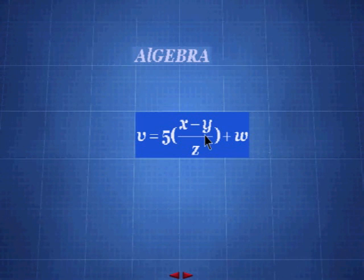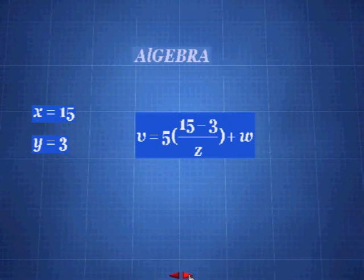And we're going to start by finding the values of x and y. So x is 15 and y is 3. So what we're going to do, we're going to do 15 minus 3 equals 12. So we're going to put 12 in there.